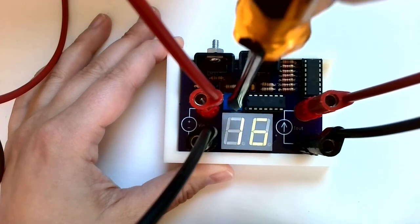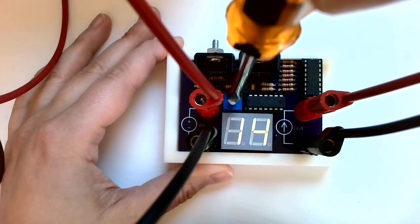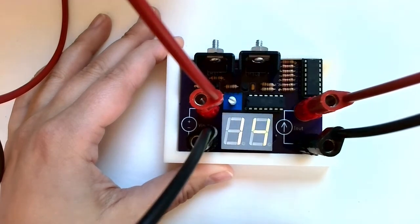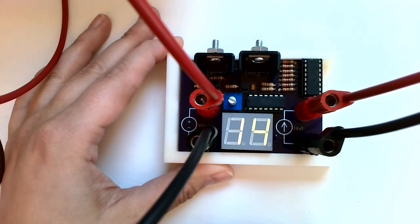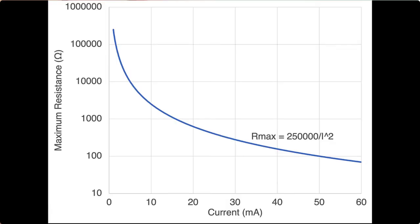Again, keep in mind that this is a constant current source. The issue with a constant current source is going to be the higher the current, the less resistance we can have given a quarter-watt resistor before the power rating is going to be maxed out.